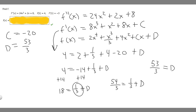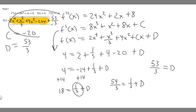Now that we have c and d, we can plug them into our function. So f of x is equal to 2x to the 4th plus x cubed over 3 plus 4x squared. Then plus cx, where c is minus 20, so it becomes minus 20x, plus d, where d is 53 over 3. This is the answer to the question.